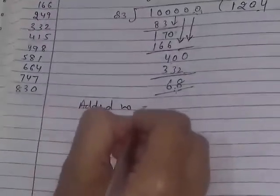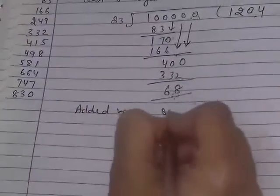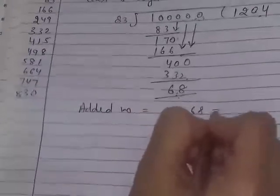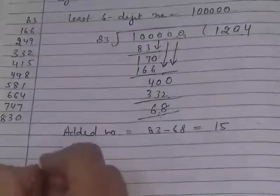What we add? Added number. The method to find added number - from divisor subtract remainder. Subtract it, 83 minus 68 equals 15. Now 15 will be added.